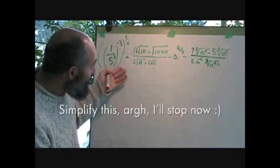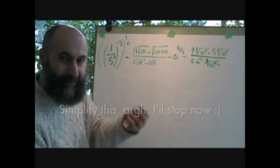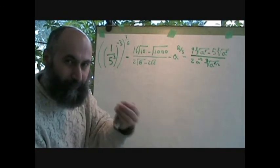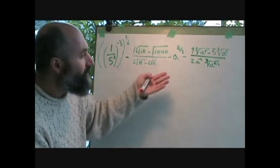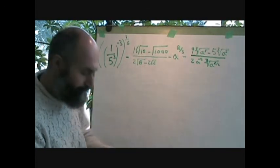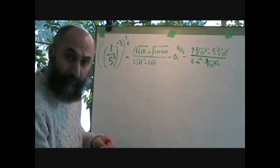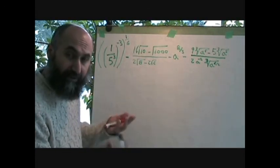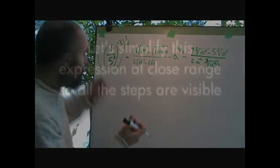So you can basically solve this and feel fairly comfortable with it. If you can solve this it means you've pretty much got the basic rules of exponents and radicals down. So let's start breaking this down and see where we can take it and how we can combine like terms.